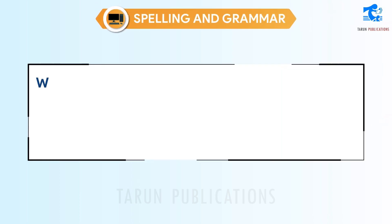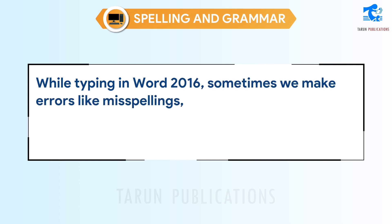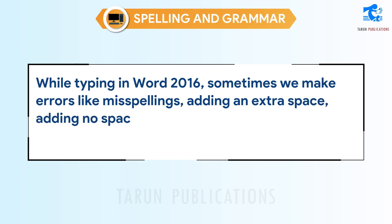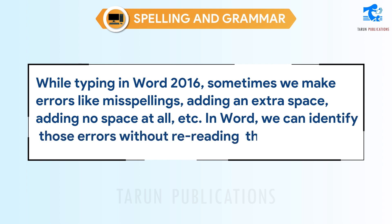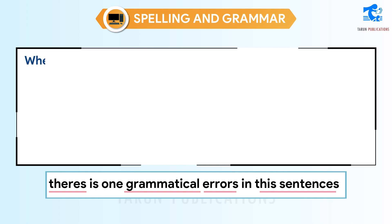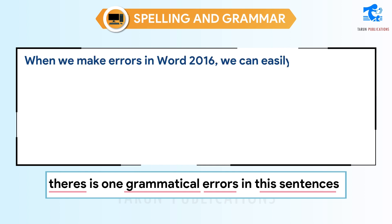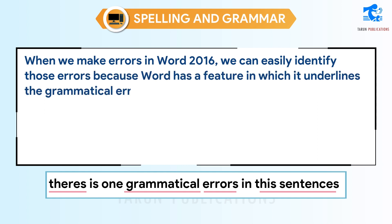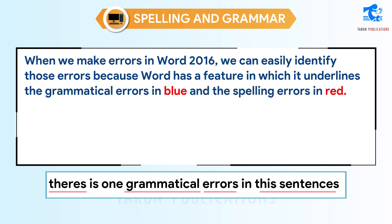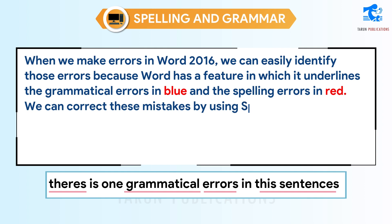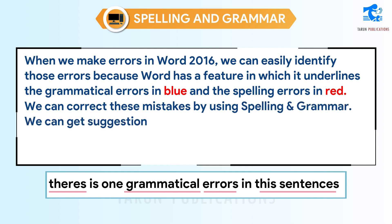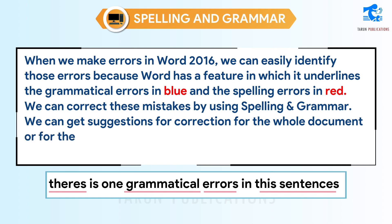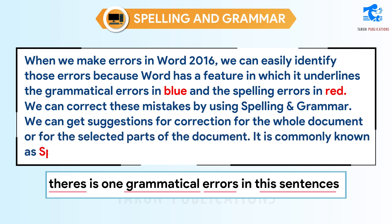Spelling and Grammar. While typing in Word 2016, sometimes we make errors like misspellings, adding an extra space, adding no space at all, etc. In Word, we can identify those errors without re-reading the whole text. Word 2016 underlines grammatical errors in blue and spelling errors in red. We can correct these mistakes using Spelling and Grammar. We can get suggestions for correction for the whole document or selected parts. It is commonly known as spellcheck.